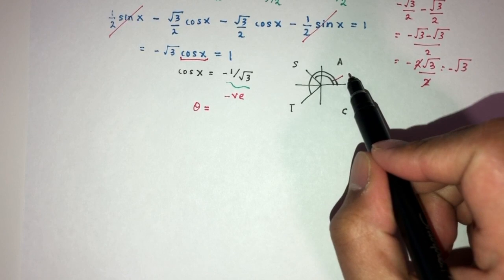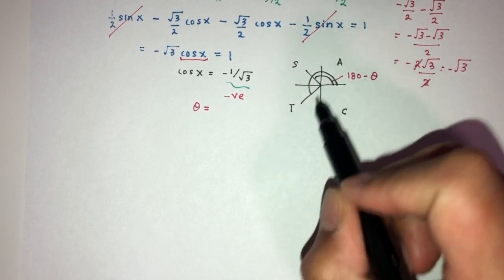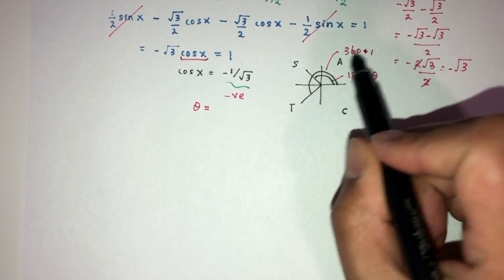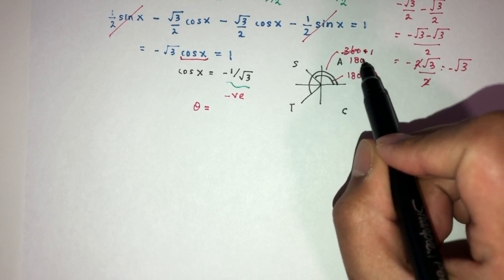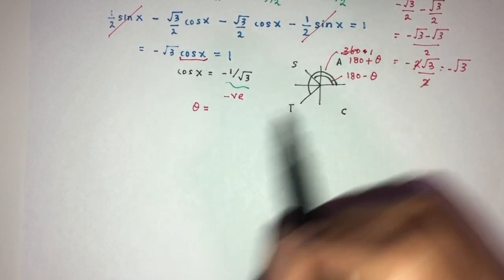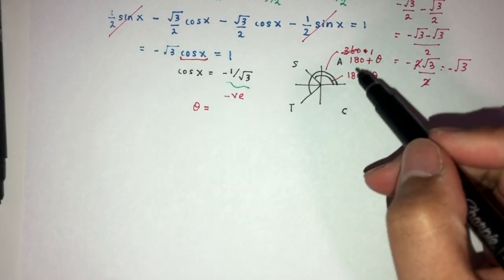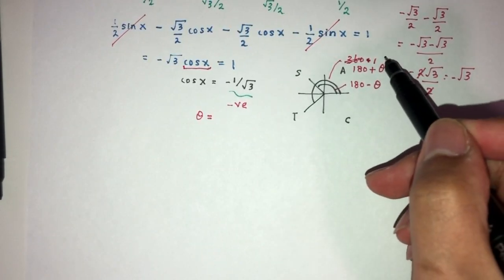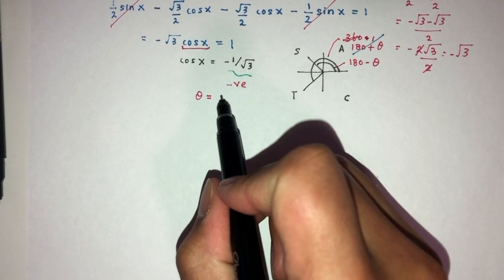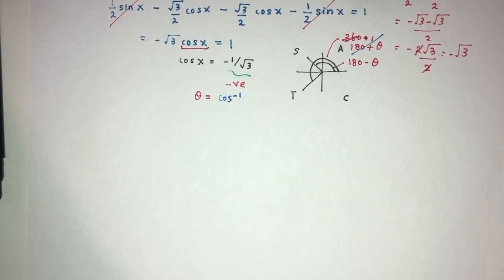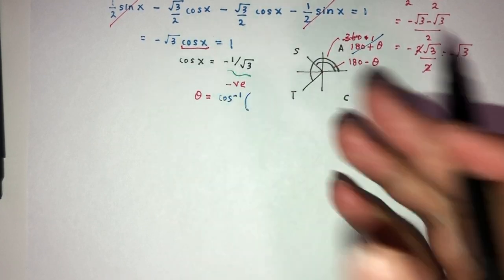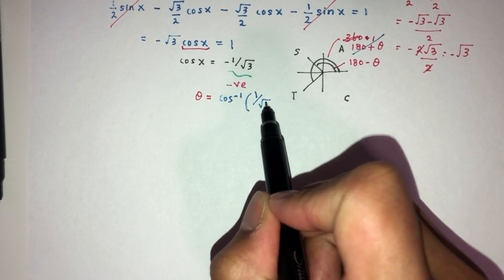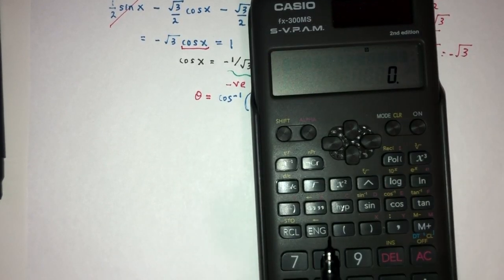In the second quadrant, x = 180° − θ, and in the third quadrant x = 180° + θ. However, since the domain is 0° to 180°, we only need the second quadrant formula. Remember, theta is not the answer — it is the reference angle that helps us find x. So theta = cos⁻¹ of the positive value, i.e., 1/√3.